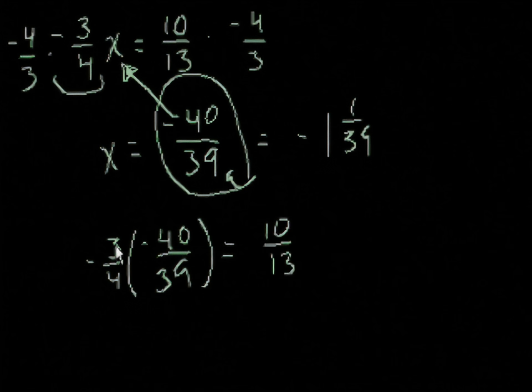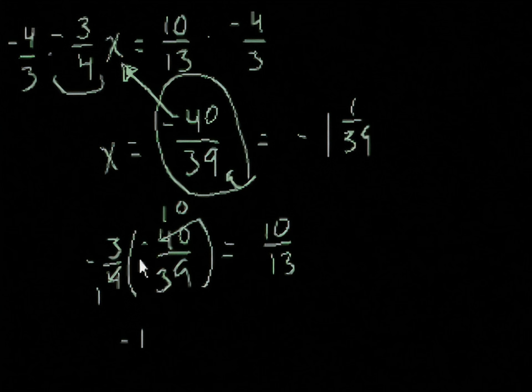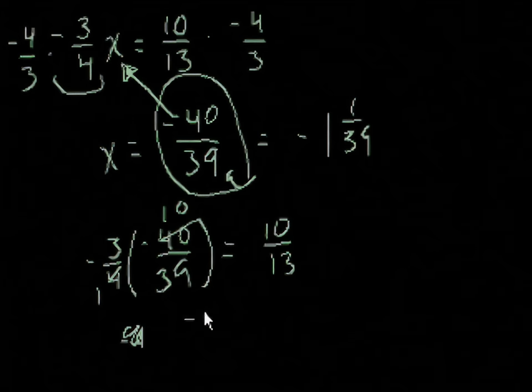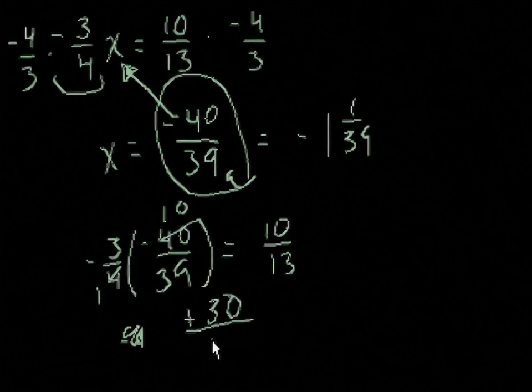And our original equation said that that equals 10 over 13. Well, and once again, when I just write the 3 fourths right next to the parentheses like that, that's just another way of writing times. So minus 3 times minus 40 is minus 100. And actually, we could do something a little bit simpler. This 4 becomes a 1 and this becomes a 10. And if you remember, when you're multiplying fractions, you can simplify it like that. So it actually becomes plus 30, because we have a minus times a minus and 3 times 10, over the 4 is now 1, so all we have is left is 39.